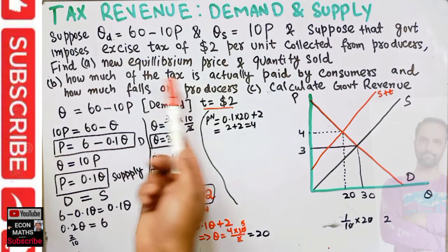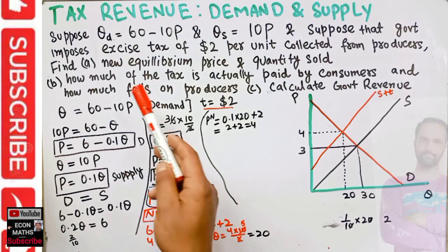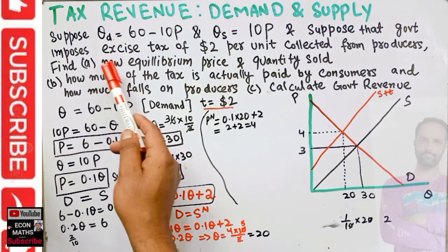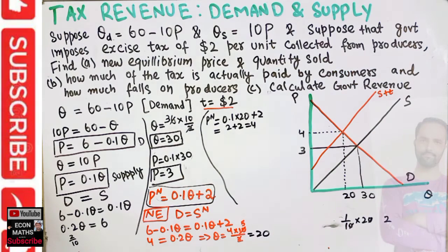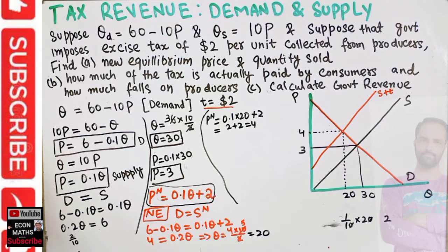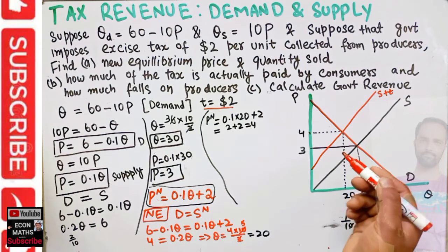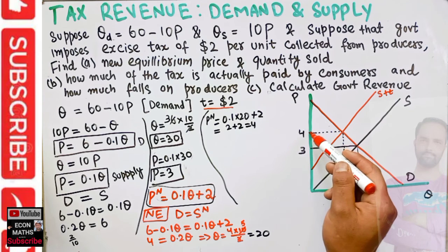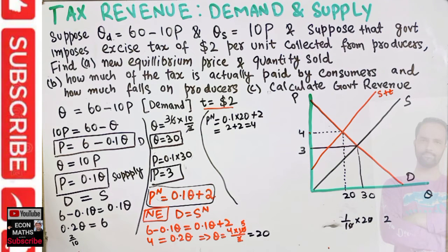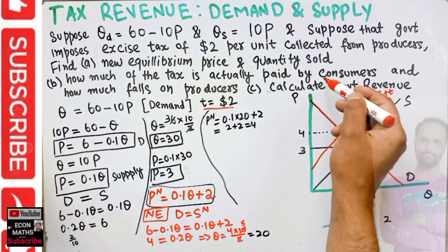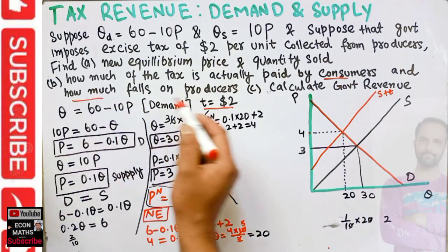This answers the first part: the new equilibrium price is 4 and the new equilibrium quantity sold is 20. The next question is: how much of the tax is actually paid by consumers and how much falls on producers?